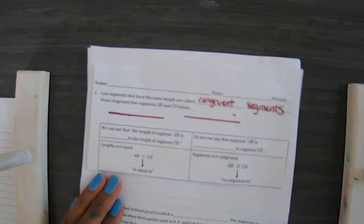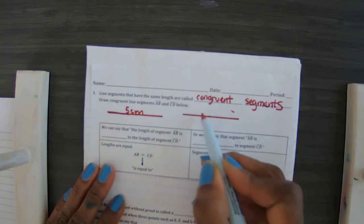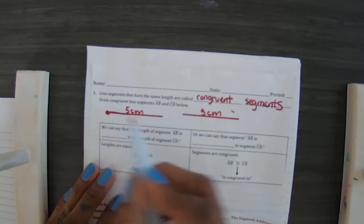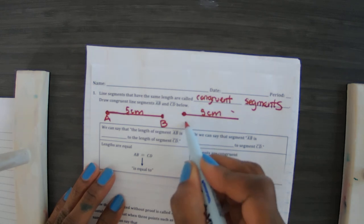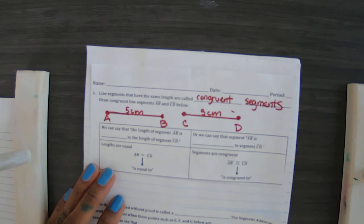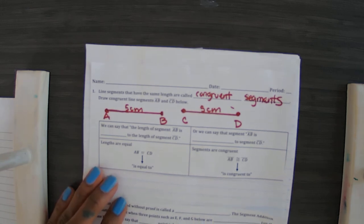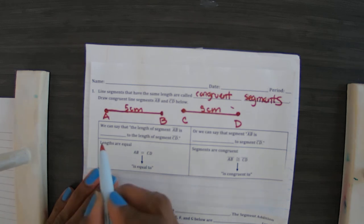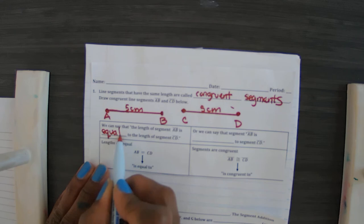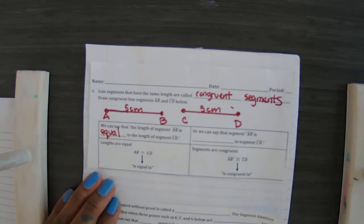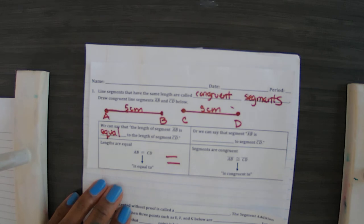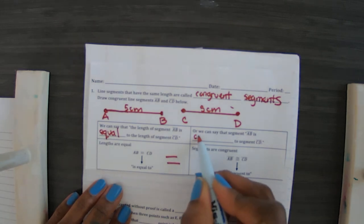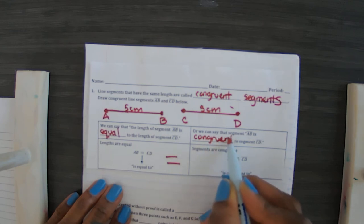Okay, the first one I'm gonna call AB, this is segment AB, and this is segment CD. So what I can say is segment AB is congruent to segment CD. Their lengths are the same. We can say that the length of segment AB is equal or equivalent to segment CD, or the length of segment CD. Lengths are equal, or we can say segment AB is congruent to segment CD. Segments are congruent, lengths are equal.